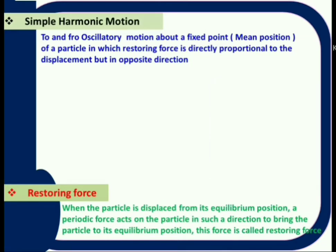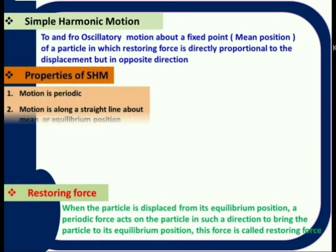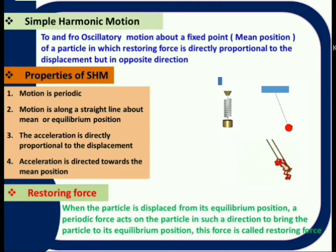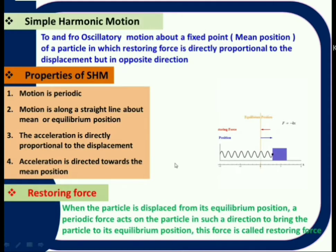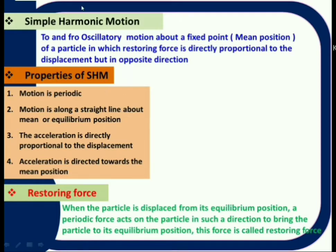The body has to move towards and away from a fixed point. Second, it should be periodic in motion — it has to repeat its motion after a particular time interval. Third, the restoring force is always proportional to the displacement and acts towards the mean position. Acceleration is also proportional to the displacement in the opposite direction: a proportional to minus x. If the motion satisfies these conditions, it is called simple harmonic motion.